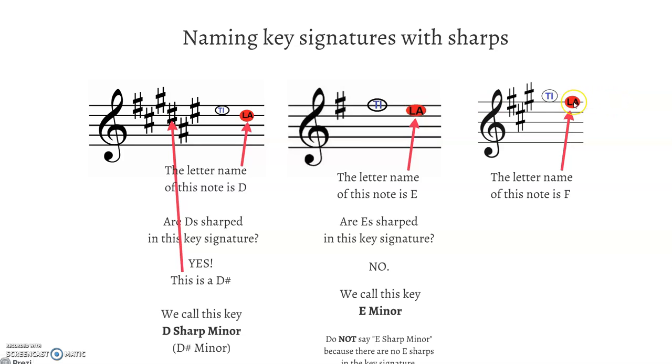La is F. Check the key signature. Are F's sharped in this key signature? Yes, they are. That is an F sharp right there. So we're going to call this F sharp minor.